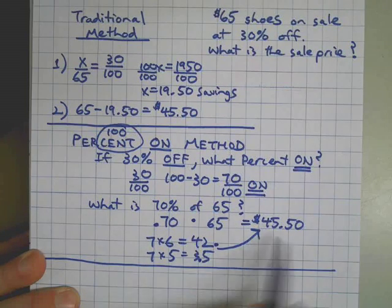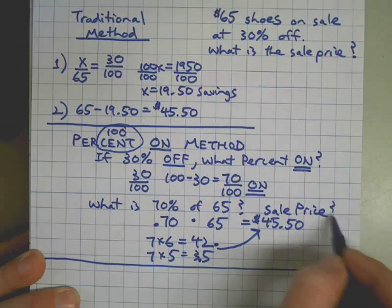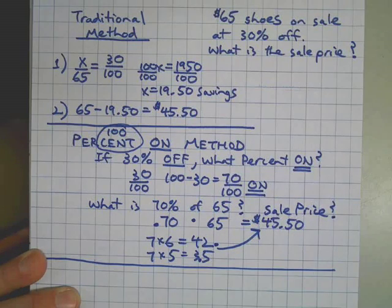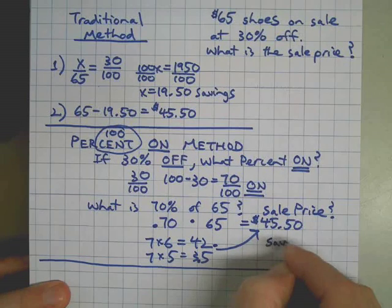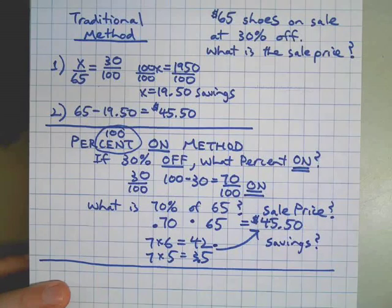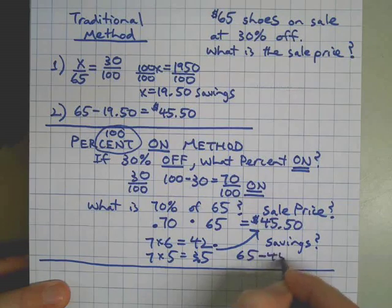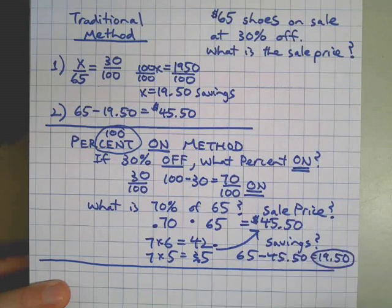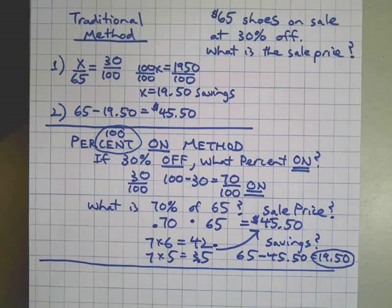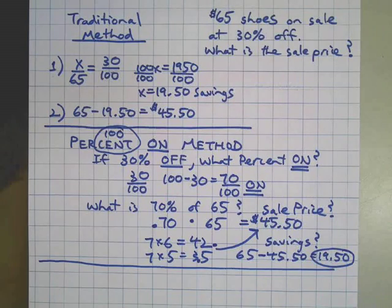Now in the real world we're done with that. If we wanted to figure out how much savings happened, then we could always just do the original price minus the sale price to get our savings. But many times in the real world we don't need to know how much the savings was, we just need to know what was the price - that's what's coming out of our pocket.